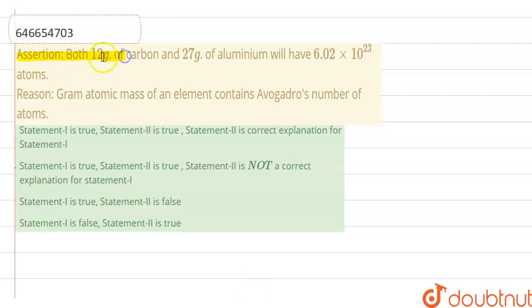Assertion is here: both 12 gram of carbon and 27 gram of aluminum will have one Avogadro number, means 6.02 × 10^23 atoms. Reason: gram atomic mass of an element contains Avogadro's number of atoms. Yeah, exactly both statements are correct.